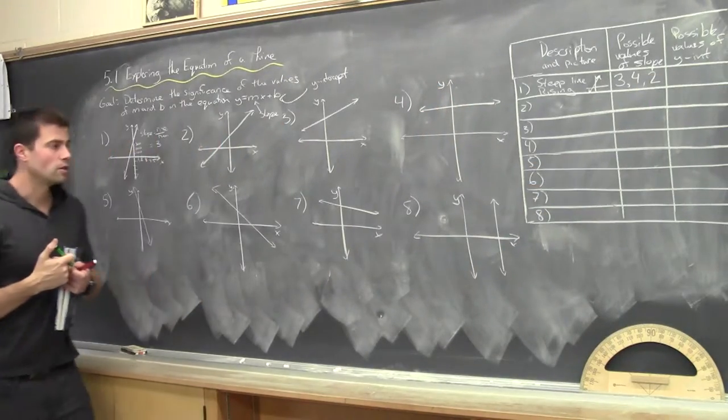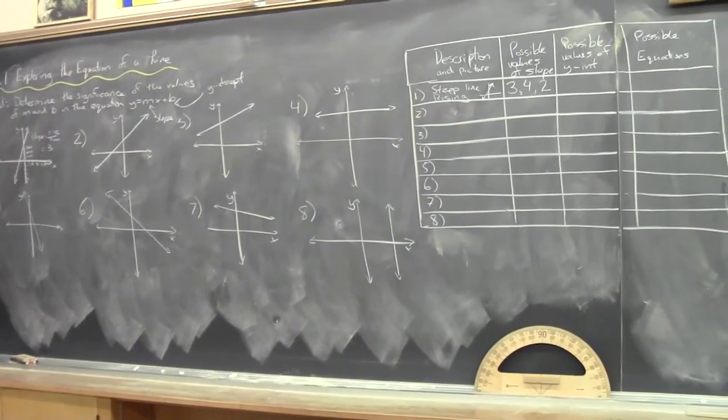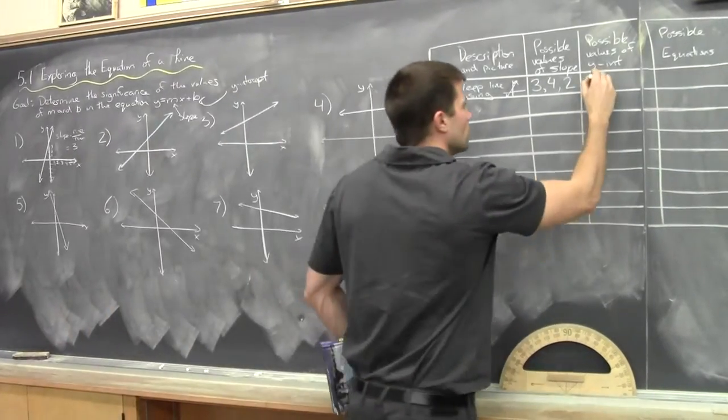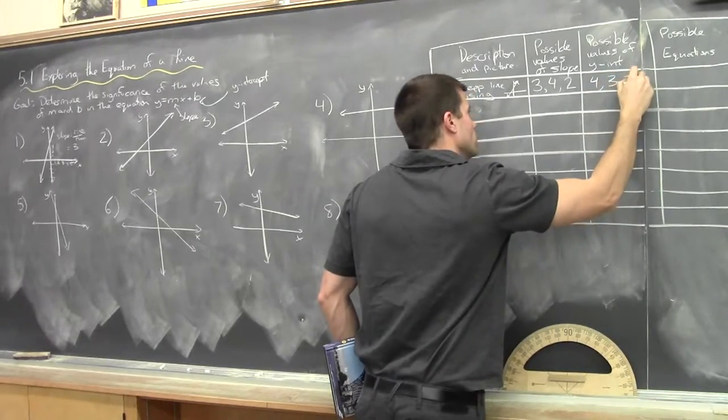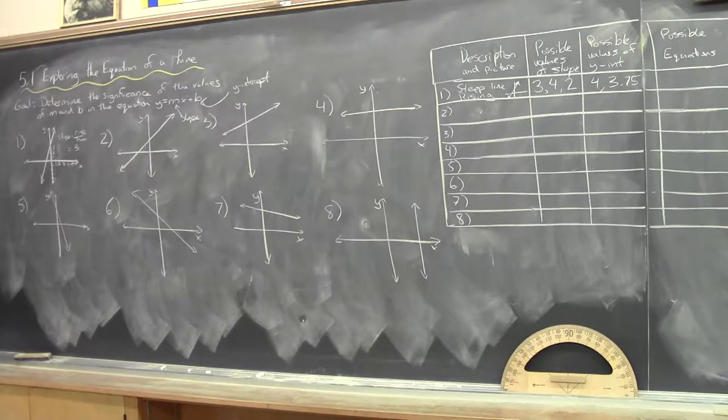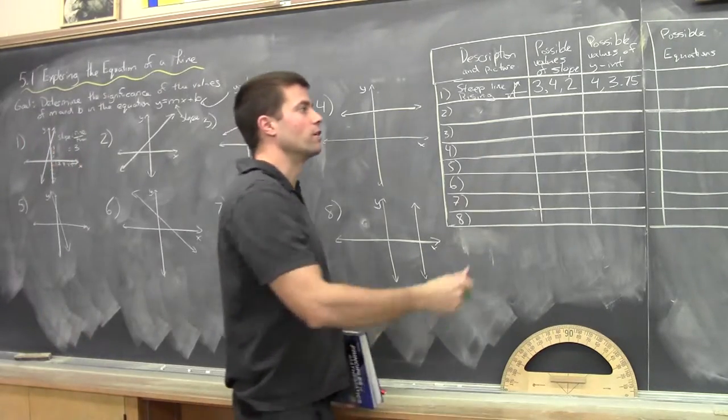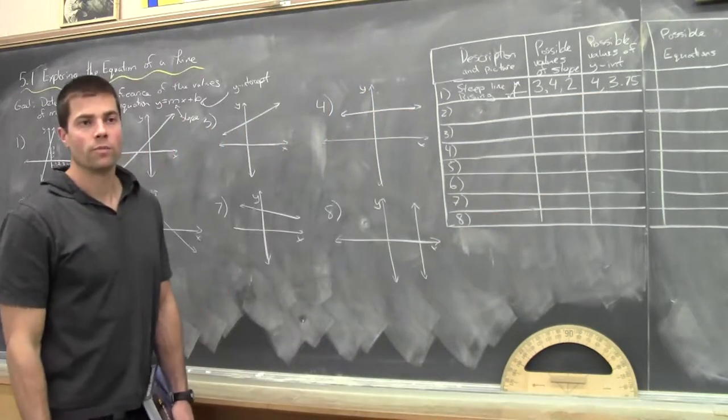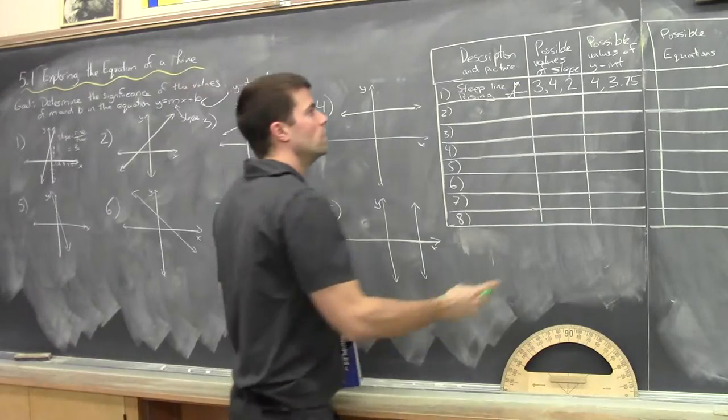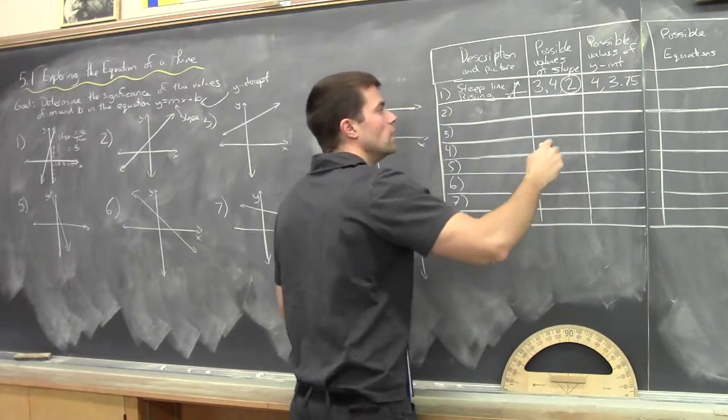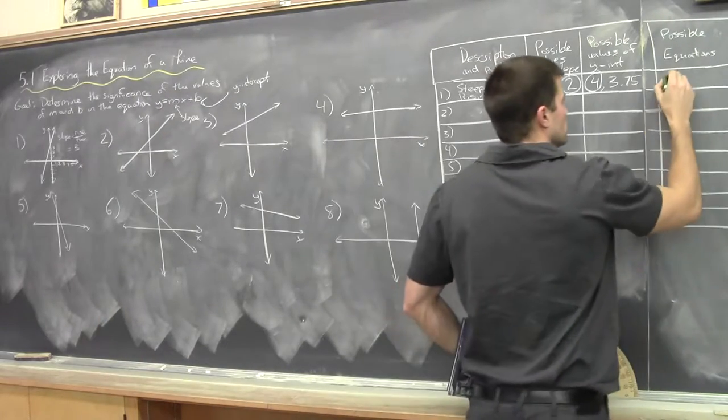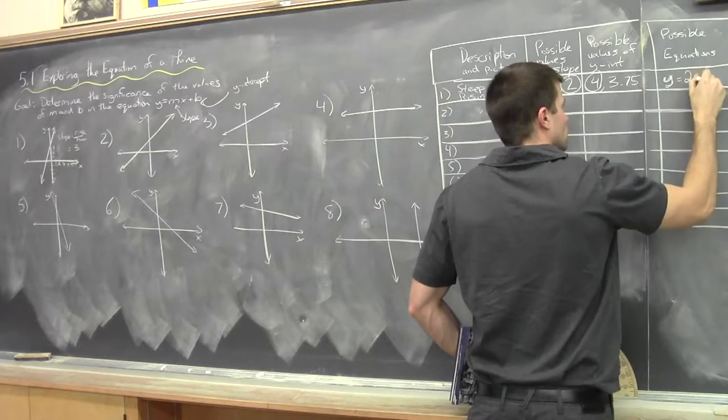Let's finish filling in. Possible values of y-intercept. Chris, let's look at this. Where does it cross the y value? It crosses the y at the top. Four. Yes. It's right around four. I would say four. You might argue that it's actually 3.75. Looks a little bit less than four. And possible equations. So, what's a possible equation now? So, let's use our slope value, let's say it's 2, and let's say our y-intercept is 4. What's a possible equation now? Y equals 2x plus 4. Excellent. That's it.